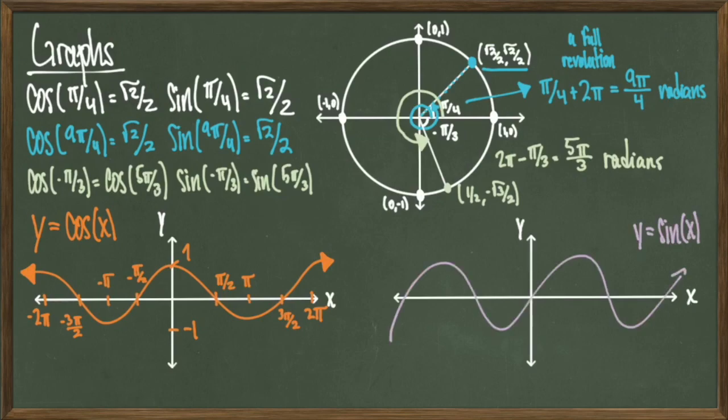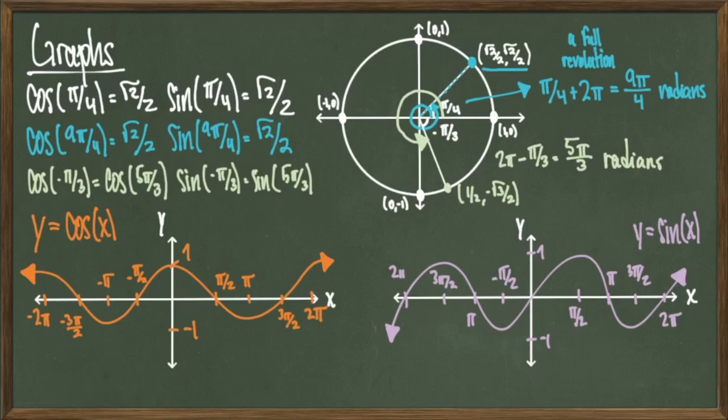Y equals sine of x has a very similar appearance — it stretches as tall as positive 1, goes down as far as negative 1, and expands left and right infinitely. Cosine and sine repeat a lot of values, and the graphs definitely show that. Since they zigzag, a lot of the same y values are repeated even though they're evaluated at different x values. Functions that behave like this are called periodic, and we'll talk about that more in the next slide.